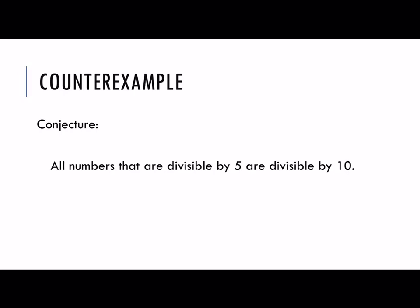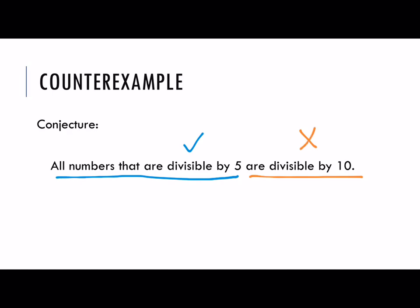What about the conjecture that all numbers that are divisible by five are divisible by 10? Quick review: divisible means divides evenly. For example, 25 is divisible by five since five goes evenly into 25. So a counterexample — we need to come up with a number that is divisible by five and not divisible by 10, and that would disprove this statement. The one I just mentioned, 25, would work: it is divisible by five and it's not divisible by 10.